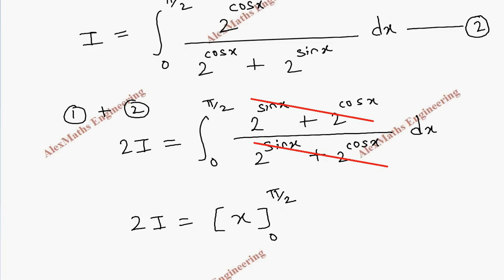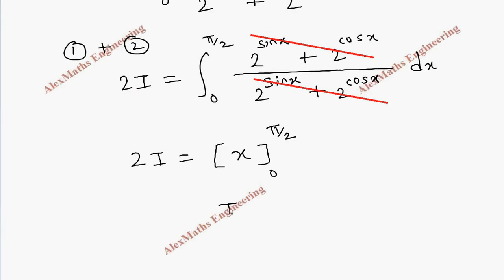2I equals substituting the upper limit we get π/2 and lower limit minus 0. So 2I equals π/2, from this I equals π/4.